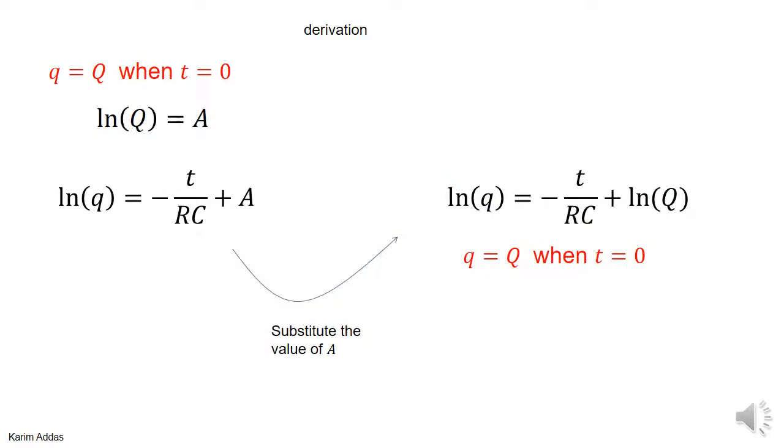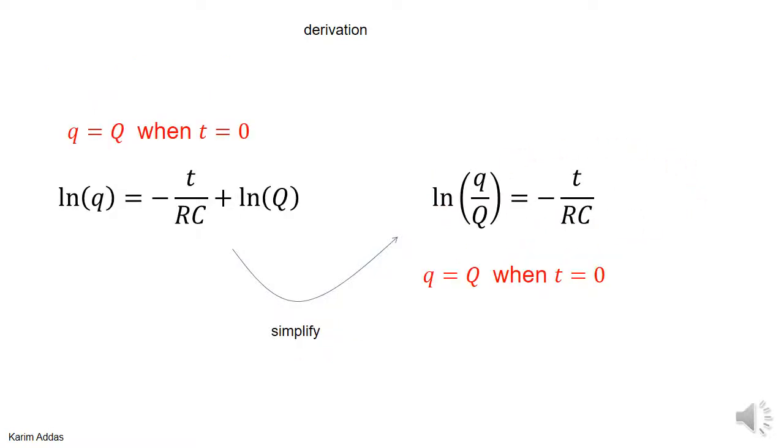If you take now the value of A and substitute it into the equation, you get this equation. After some manipulation you can bring ln minus the ln as the ln of the ratio.